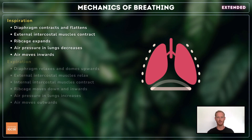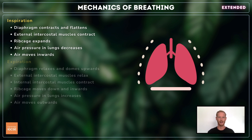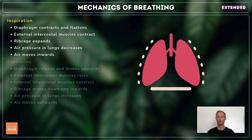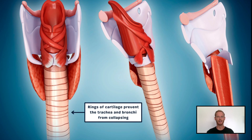When breathing in, the diaphragm contracts and flattens, and the external intercostals contract to expand the ribcage. These actions increase the volume of the thorax and lungs, which causes the air pressure within to drop below that of the atmospheric air. Since gases move from areas of high to low pressure, air rushes in through the nose and trachea. The trachea and bronchi are lined with rings of cartilage that prevent the airways from collapsing while breathing.